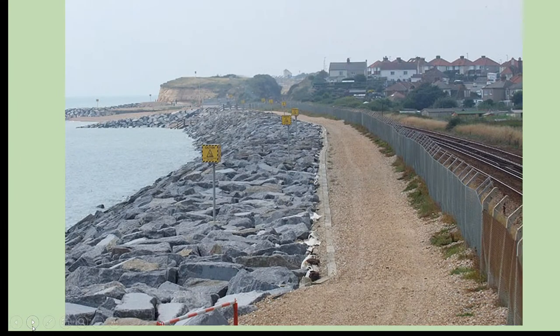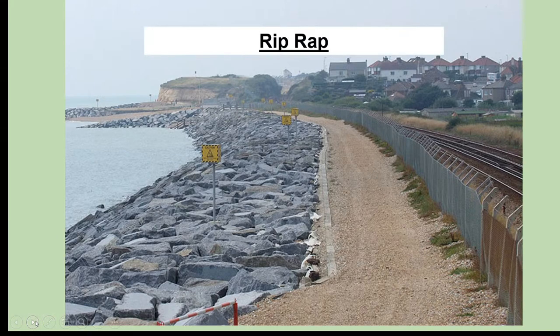This next one might look like a sea wall because it has rock armour, but it's not — it's called riprap. Riprap is simply huge boulders placed on the sea. Like a beach, they can move around and absorb the energy of the waves, and provided you pick the correct rocks — really hard ones — it can be a very strong and solid form of coastal engineering.